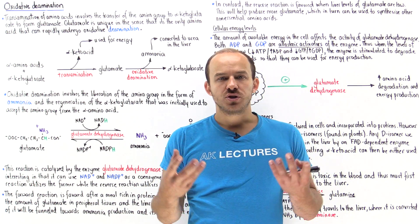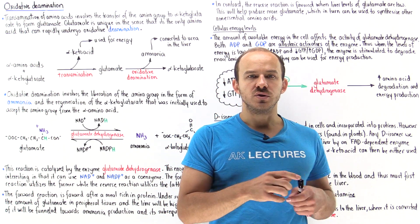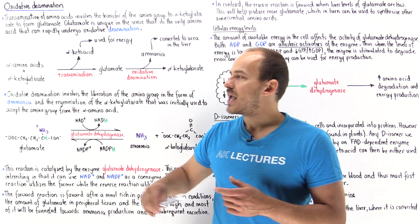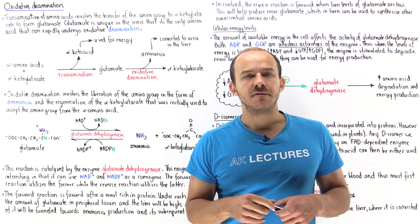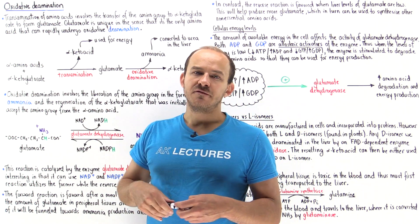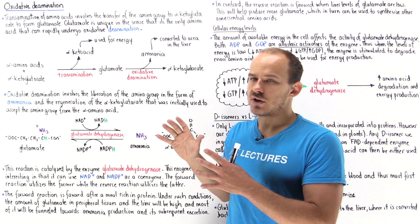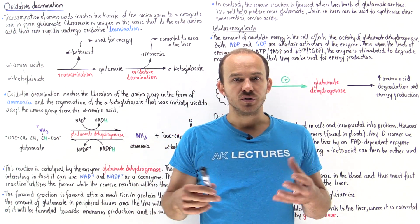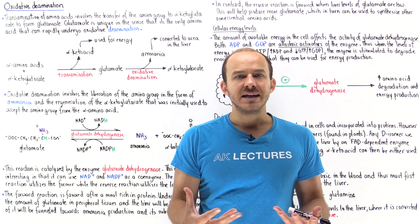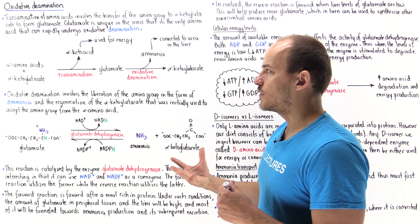Suppose we ingest a meal rich in protein and our body breaks down the protein into individual amino acids. Now the cells of our body can use some of these alpha amino acids to help form new protein. But the remainder amino acids which are not used have to be excreted by the body because our cells have no way of storing these alpha amino acids in the long term.